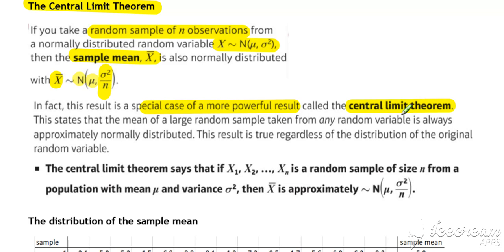So the actual Central Limit Theorem in its entirety states this: that the mean of a large random sample taken from any random variable, so any random variable at all, doesn't have to be normal, is always approximately normally distributed. And this result is true regardless of the distribution of the original random variable.